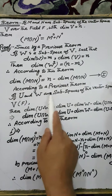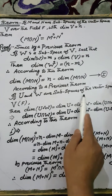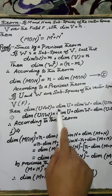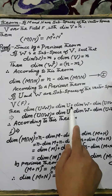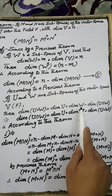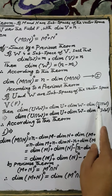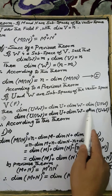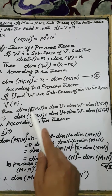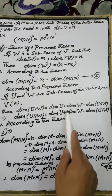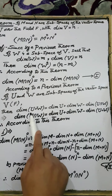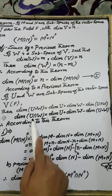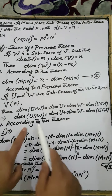According to a previous theorem, if U and W are subspaces of the vector space V over the field F, then the dimension of U plus W equals the dimension of U plus the dimension of W minus the dimension of the intersection of U and W. This can also be written as: dimension of U intersection W equals dimension of U plus dimension of W minus dimension of U plus W.